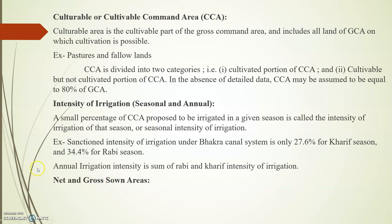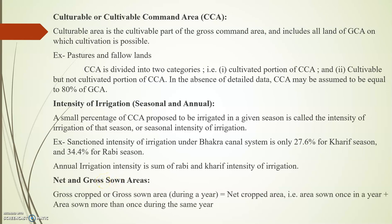All these terms are very important as they help us compute the design capacity of any canal. The gross cropped or gross zone area during a year equals the net cropped area — that is, the area sown once in a year — plus the area sown more than once during the year, whether twice or thrice.